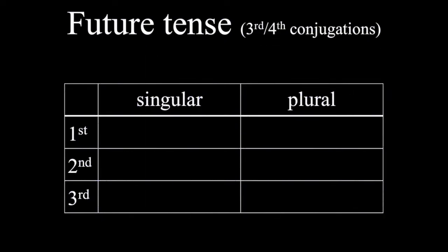So now let's see the endings that we actually are going to apply to third and fourth conjugation verbs. And those are am, es, et, emus, etis, and ent.